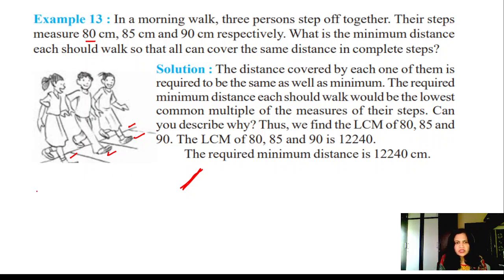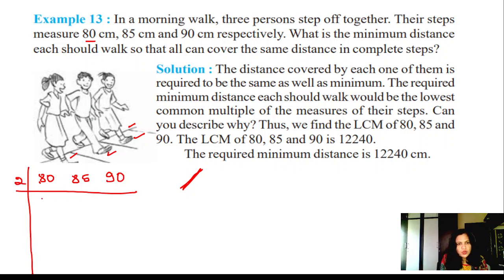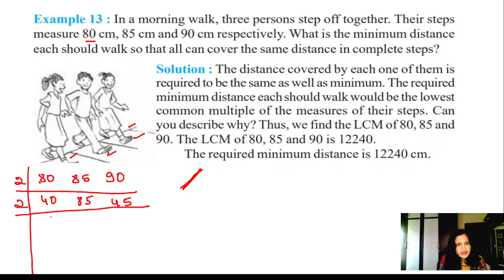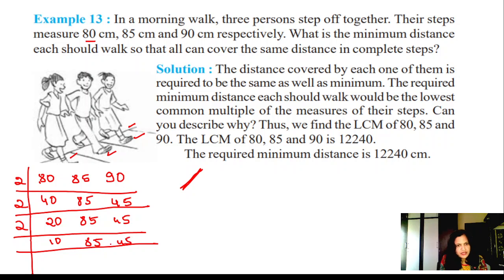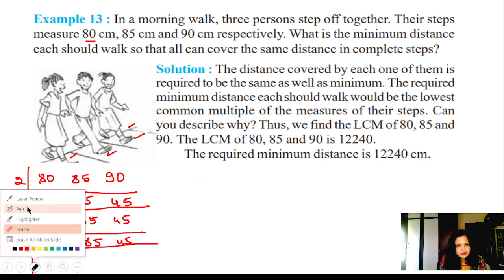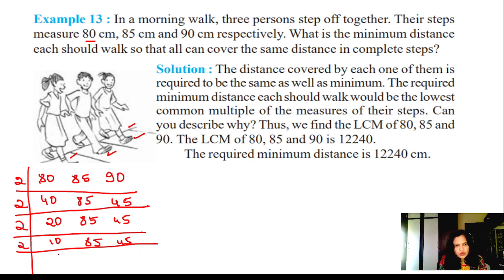We start dividing 80, 85, and 90 by prime numbers. First by 2: 80 ÷ 2 = 40, 85 stays as it is (not divisible by 2), 90 ÷ 2 = 45. Again by 2: 40 ÷ 2 = 20, 85 stays, 45 stays. Again by 2: 20 ÷ 2 = 10, 85 stays, 45 stays. Again by 2: 10 ÷ 2 = 5, 85 stays, 45 stays.